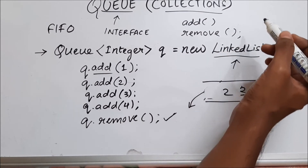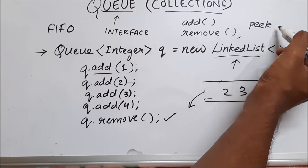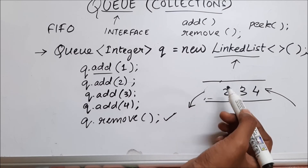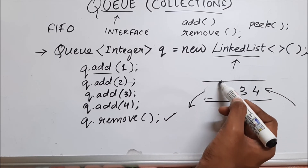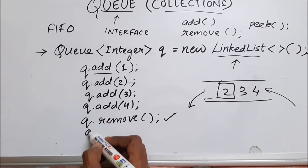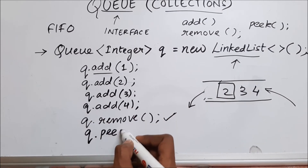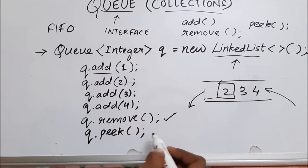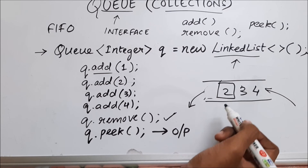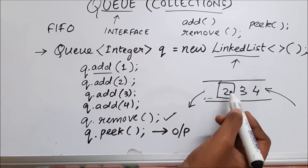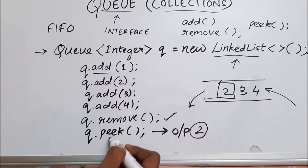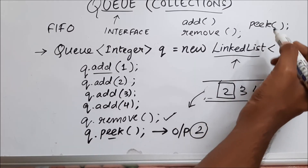Let's now discuss the peek function. Peek is a function which looks inside the queue and sees which element is present at the start. We use it as queue.peek(), and this will give us the first element of the queue as output. In this case, the first element is two, so that is the output we get for the peek function.